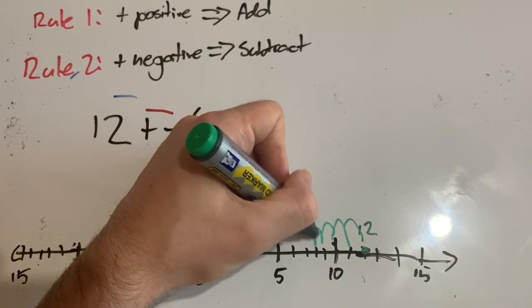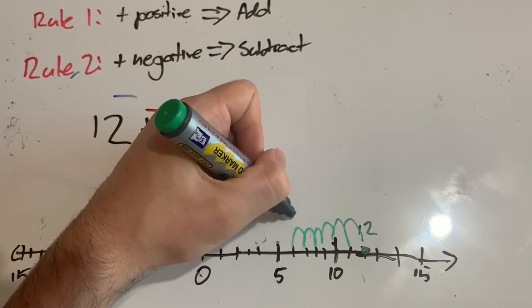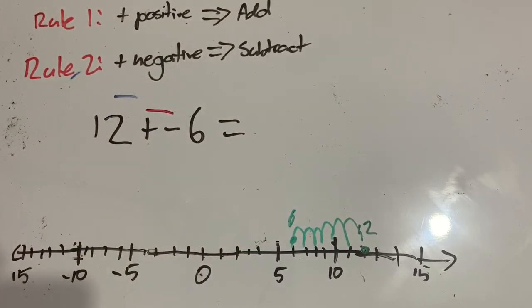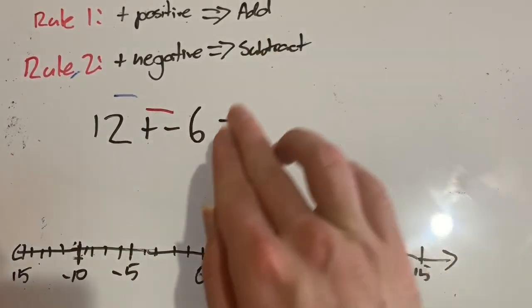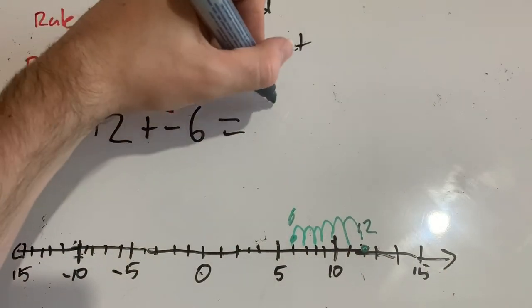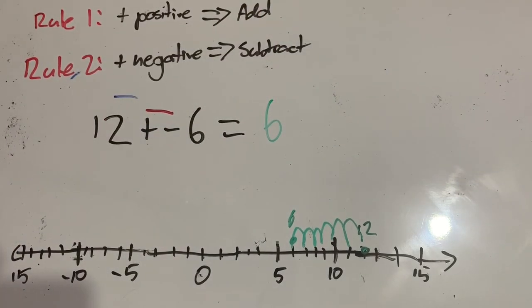And I want to subtract 6: one, two, three, four, five, six, which will land us on 6. And so 12 minus 6 is 6. This was the same problem as we had at the start of the video.